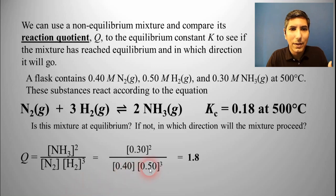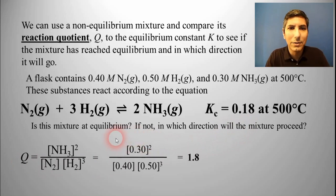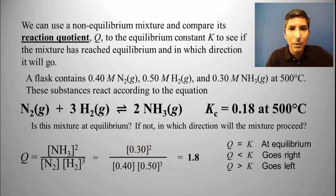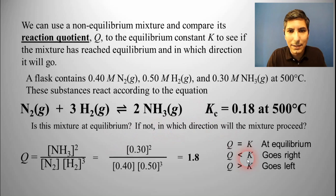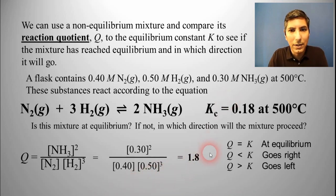We are not at equilibrium, because the only way to be at equilibrium is if Q equals K, and that's not the case. So that answers the first question. For the second question — in which direction will it proceed? If Q equals K, it's at equilibrium. If Q is less than K, the reaction goes to the right, making more products and consuming reactants. If Q is greater than K, it goes to the left, making more reactants and consuming products. Since Q (1.8) is greater than K, it's going to go toward the left.